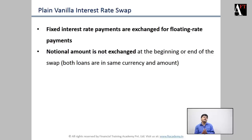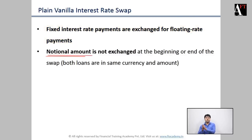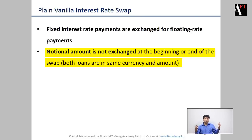Under the plain vanilla interest rate swap contract, one party makes fixed rate interest rate payments and receives floating interest rate payments. Both payments are on the basis of a notional principal — the actual principal amounts are not exchanged between the two parties. They are in the same currency and of the same amount. Both parties agree on the same notional principal amount, currency, and tenure. The notional amount is not exchanged at the beginning or at the end of the period.